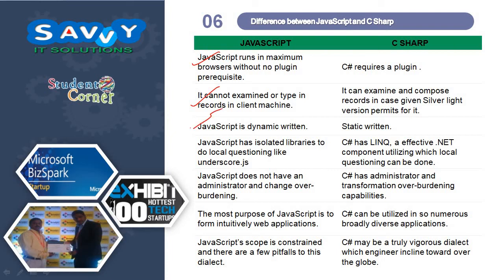Regarding JavaScript versus C Sharp: JavaScript is dynamic typed while C Sharp is statically typed. JavaScript has separate libraries for local queries like Underscore.js, whereas C Sharp uses LINQ and effective .NET components for local queries. JavaScript does not have operator and conversion overloading, while C Sharp has operator and transformation overloading capabilities. The main purpose of JavaScript is to create interactive web applications, whereas C Sharp can be used in many broadly diverse applications. JavaScript scope is limited and there are a few pitfalls to this language, while C Sharp is a truly robust language that engineers prefer worldwide.